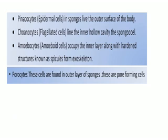In Porifera, there are four main types of cells. Pinacocytes are epidermal cells found in sponges only — they line the outer surface of Porifera. Choanocytes are flagellated cells that line the inner hollow cavity of the sponges. Amoebocytes occupy the inner layer along with hardened structures known as spicules and form the exoskeleton. Porocytes are found in the outer layer of sponges and are pore-forming cells.